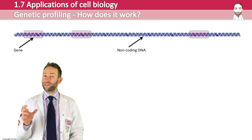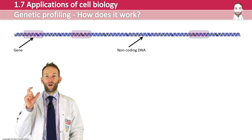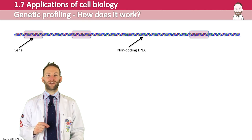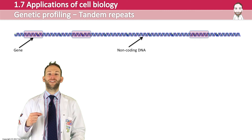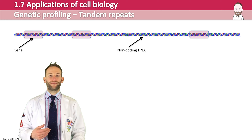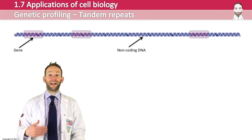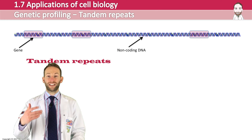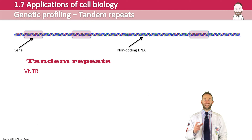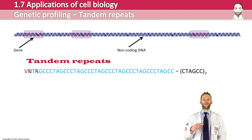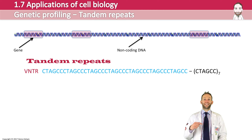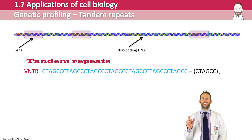Within the non-coding regions are repeated sections of codes called tandem repeats. You can have things called variable number tandem repeats, or VNTRs, which are basically repeats of six bases. For example, CTAGCC repeated seven times — that's a variable number tandem repeat.